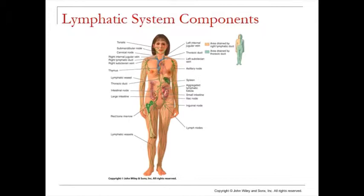Looking at an image of the lymphatic system, you can see all the different organs highlighted. The creepy green lines throughout the body are the lymphatic vessels, carrying lymph — that interstitial fluid plus fat. The highlighted red bone marrow is shown because that's where you initially make your lymphocytes. The little green dots scattered around are lymph nodes.